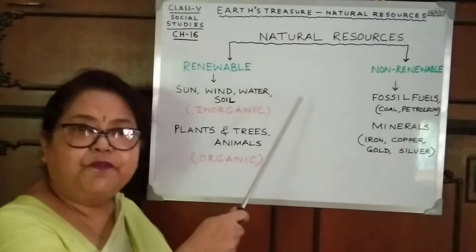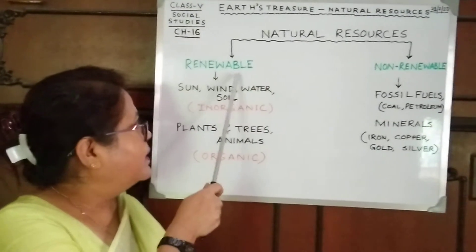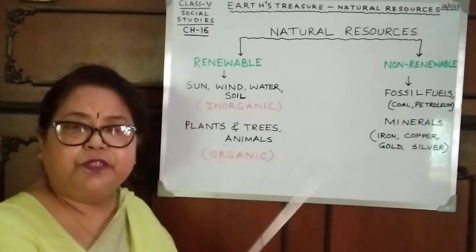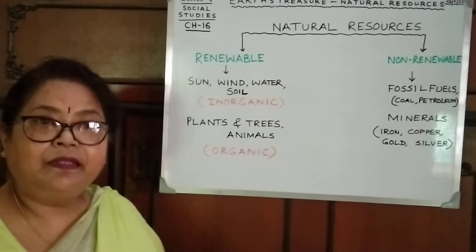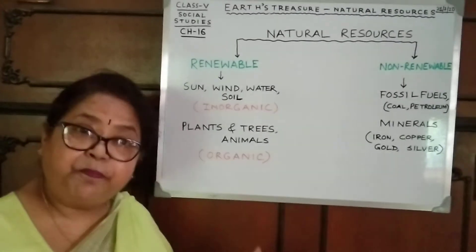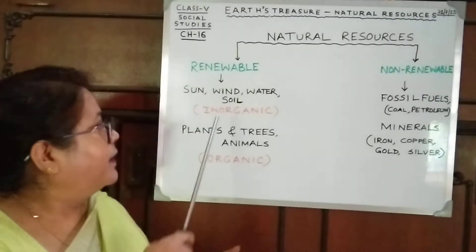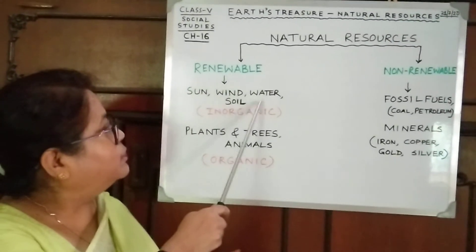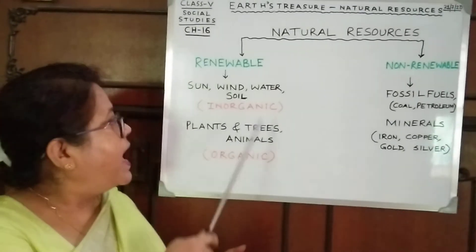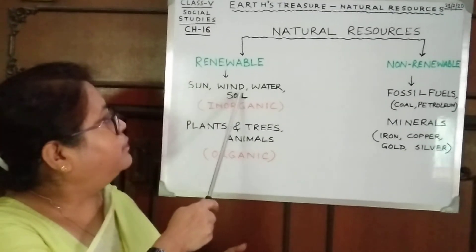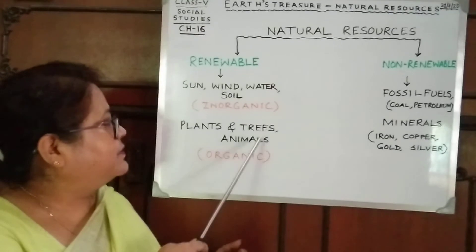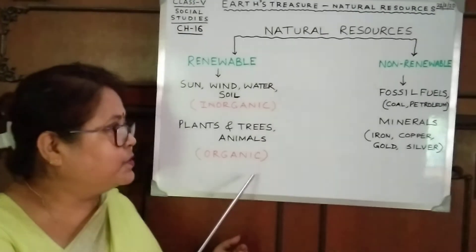There are two types of resources: renewable and non-renewable. Renewable resources we can use again and again; they are non-exhaustive and cheaper. For example: sun, wind, water, soil, plants, trees, and animals. Sun, wind, water, and soil are inorganic; plants, trees, and animals are organic resources.